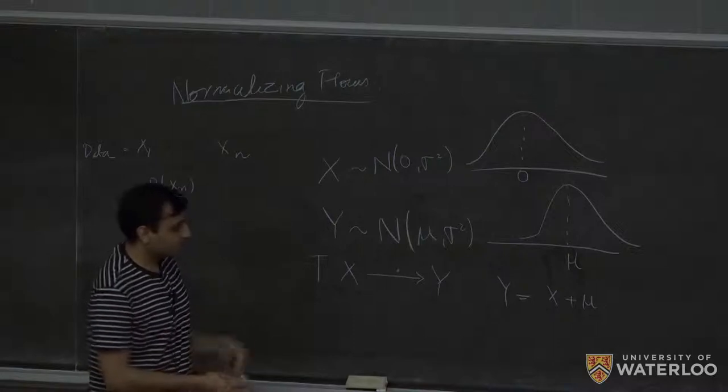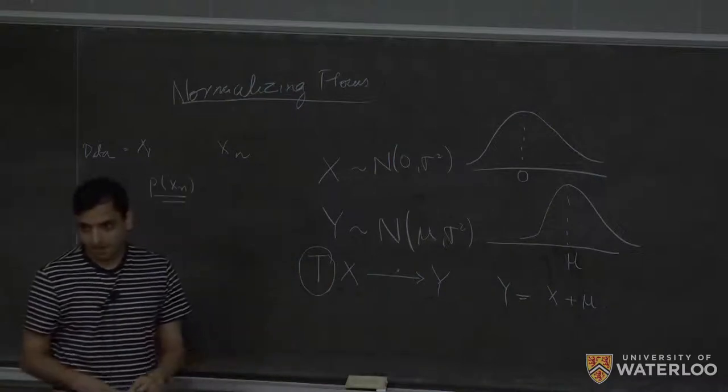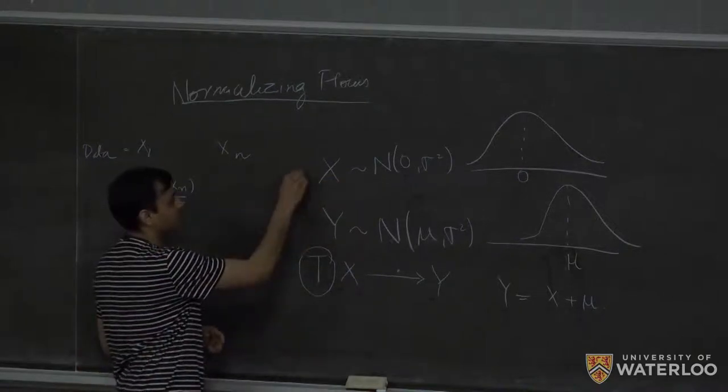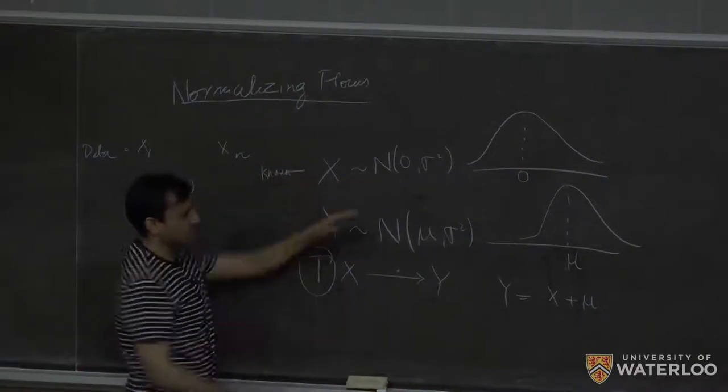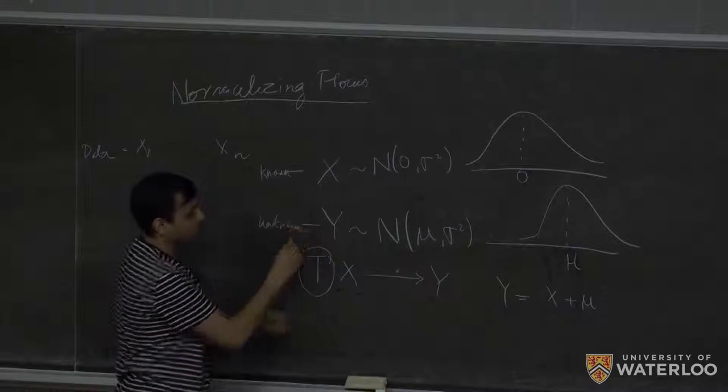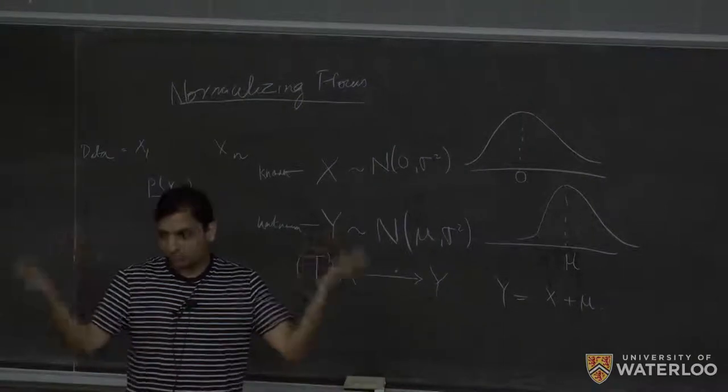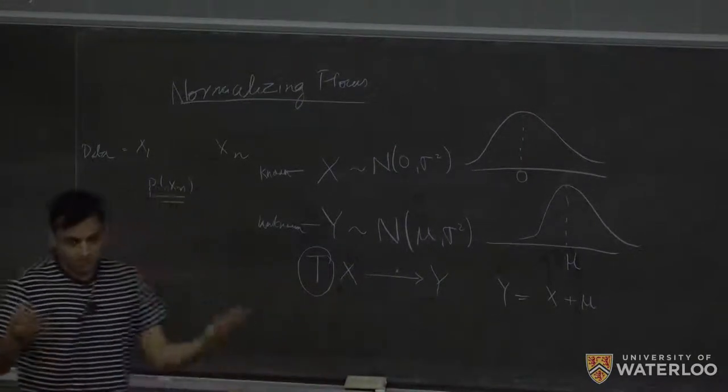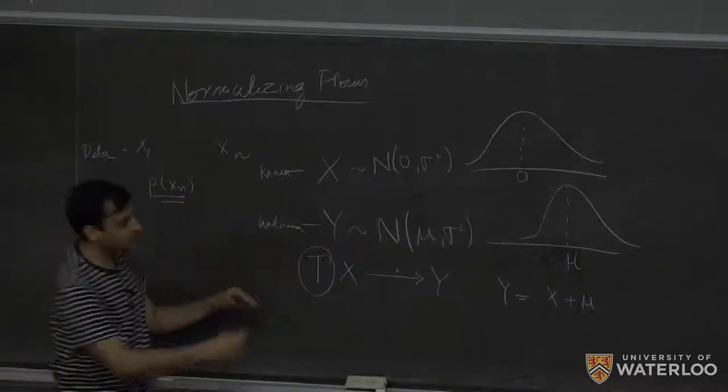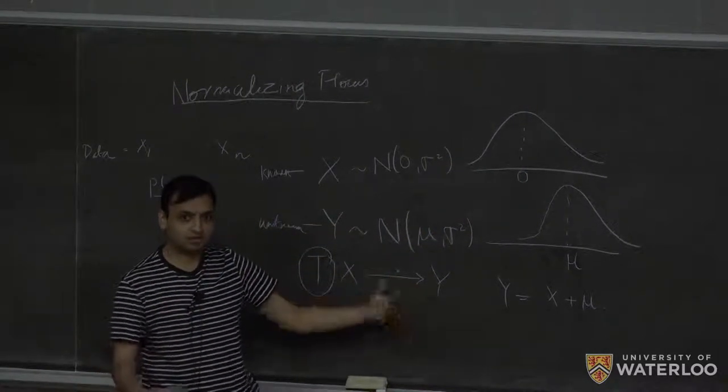So why it is x plus mu is because it is just shifted by some mu. I've just shifted the original Gaussian. So what normalizing flows do is essentially similar thing. They try to learn this transformation T. So basically, in normalizing flows, what happens is that you take some random variable x, this random variable x is known, so you can take it as Gaussian. And you have some y, which is unknown. So this is what is from your data. So here I assume that I know the form, but in reality, you only get some data. So you do not know what the distribution might be. It might be Gaussian, it might not be Gaussian.